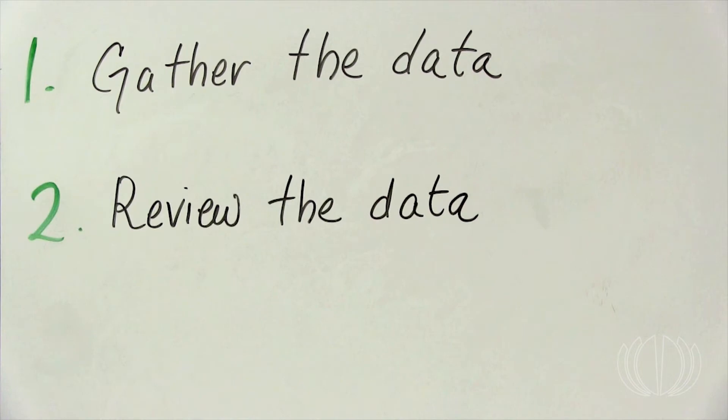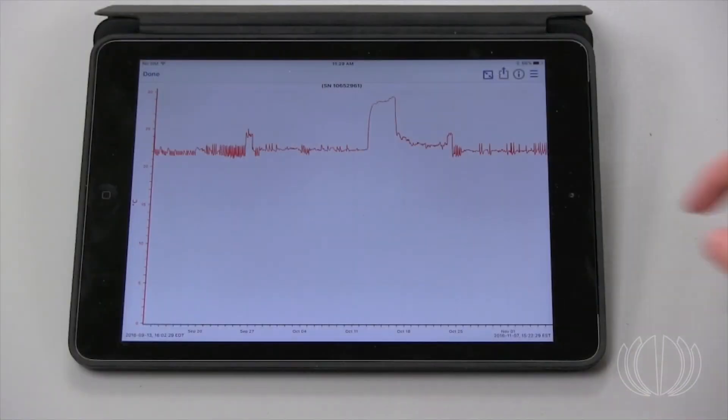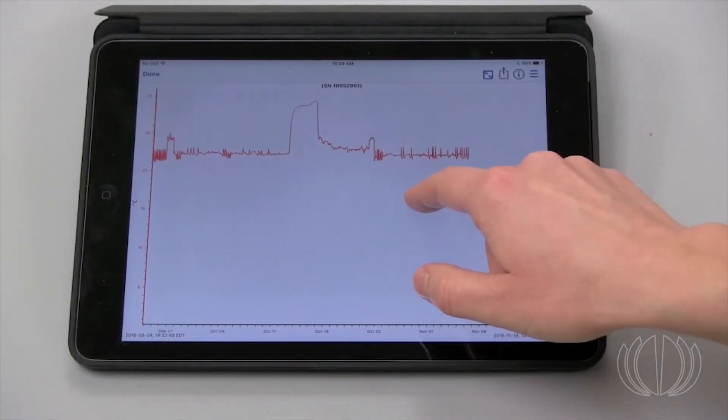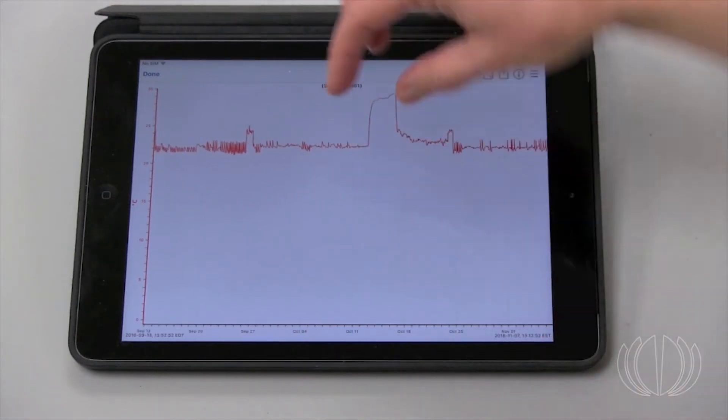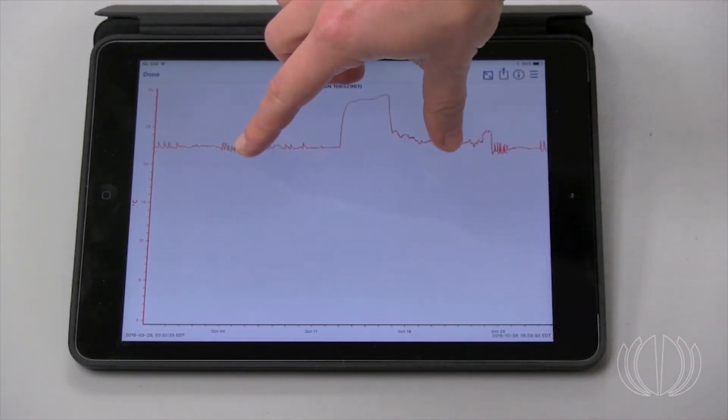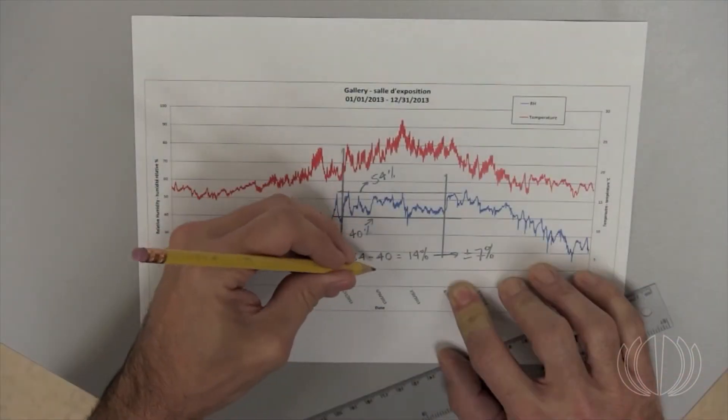It is important to regularly upload data from your data loggers or change your hygrothermographs paper. And it's useful to archive these records. But beyond this, you must review your data to understand your institution's climate and how it affects your collection.